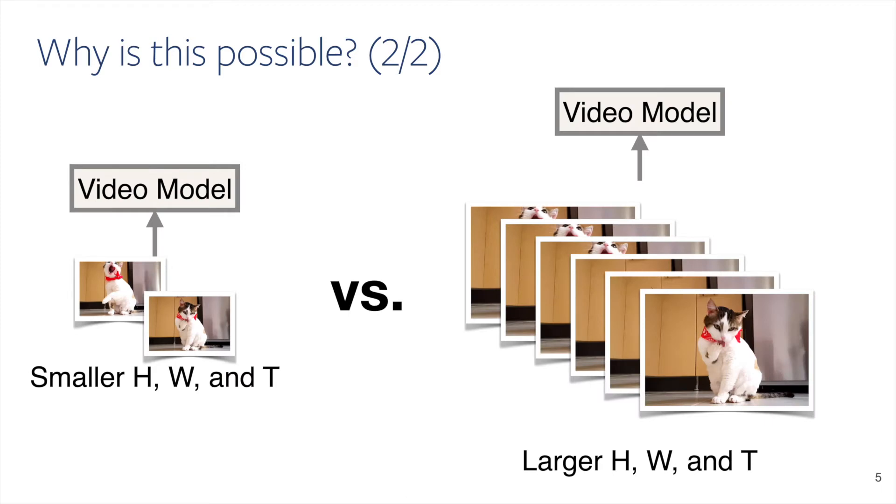Second, visual contents are redundant. If we compare training on a smaller clip and training on a larger clip, the training cost scales proportionally with the size of the clip. However, the amount of information in the clip doesn't scale proportionally with the clip size. This suggests that we may be able to leverage clips of a smaller size to train a video model more efficiently.